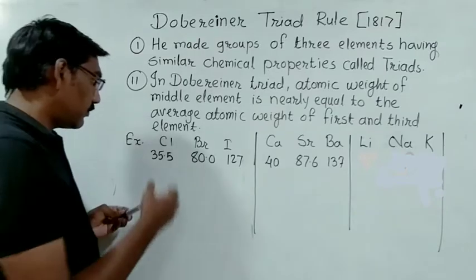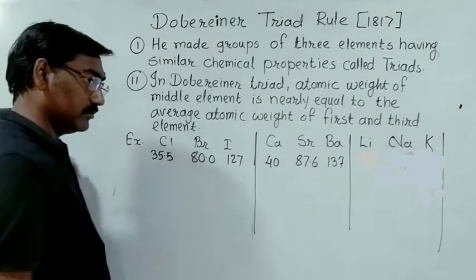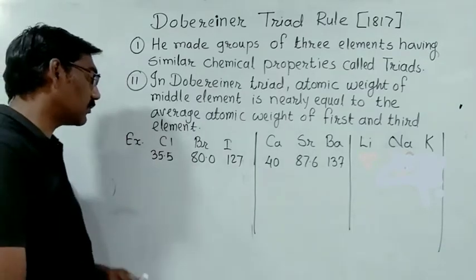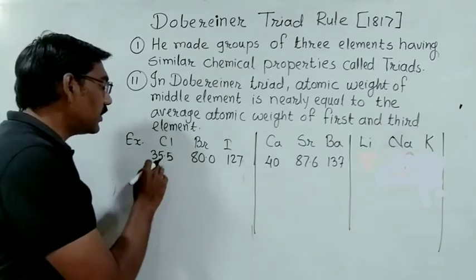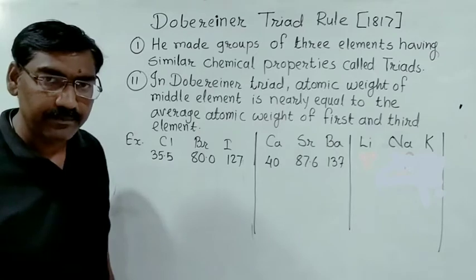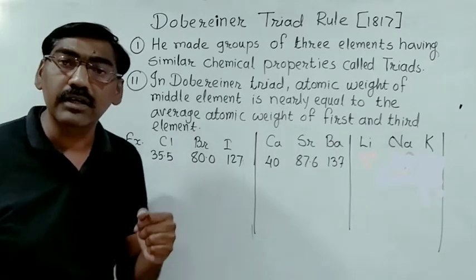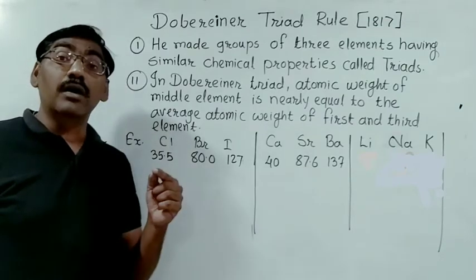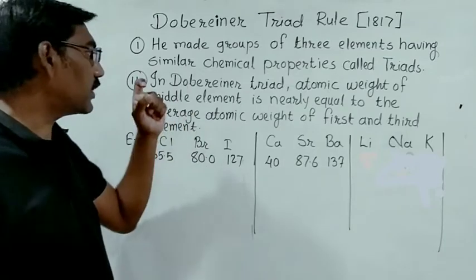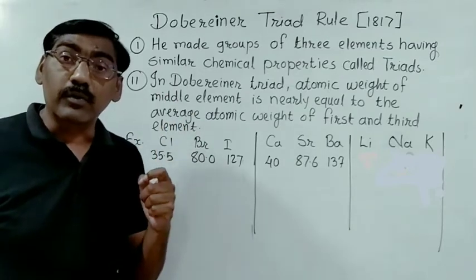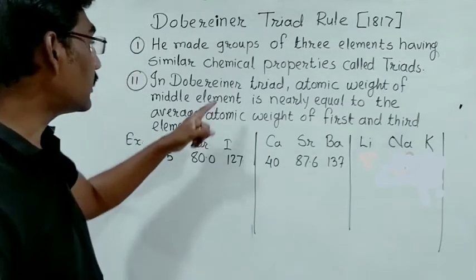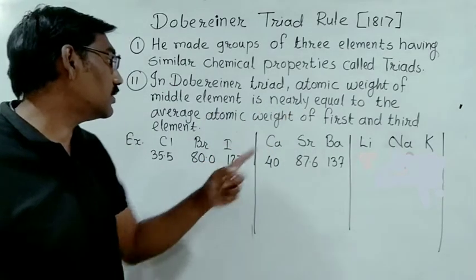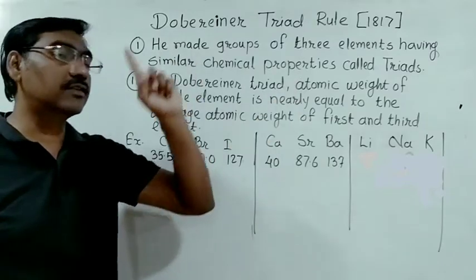The first example is Chlorine, Bromine, and Iodine — Cl, Br, I. Chlorine has an atomic weight of 35.5, Bromine is 80, and Iodine is 127. This is a Dobereiner triad where the properties are similar and the atomic weight of the middle element is nearly equal to the average atomic weight of the first and third elements.